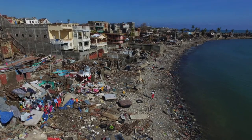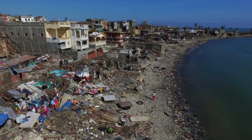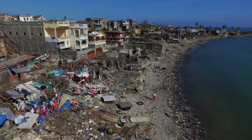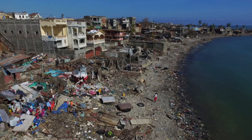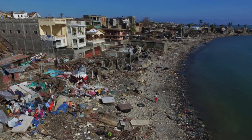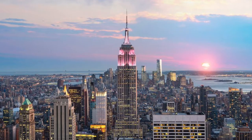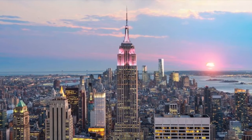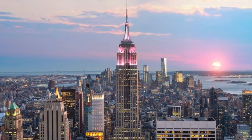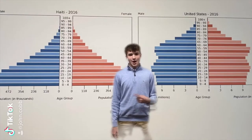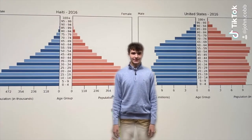Different countries have different population growth depending on how developed they are. The more undeveloped a country is, the more kids it tends to have, causing its population growth diagram to have a wider base. The more developed a country is, the more equal the ages are overall, making its population diagram more of a column.